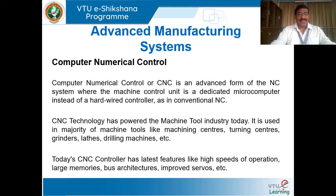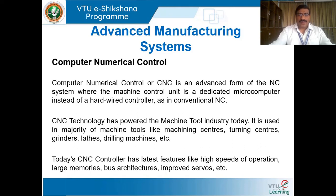We discussed what exactly a computer numerically controlled system is — it is an advanced form of the NC system. NC stands for numerically controlled machines, which came into existence in the 1940s. Mr. John Parsons came out with this NC system wherein operations were automated: alphanumeric data was encoded on punched tapes, and when these punch tapes were interfaced with machine tools like lathes, operations were performed automatically.